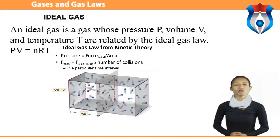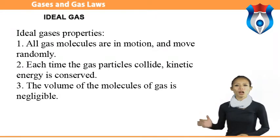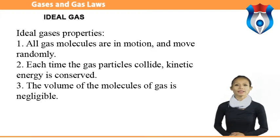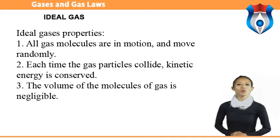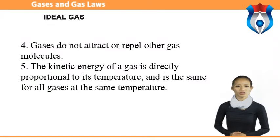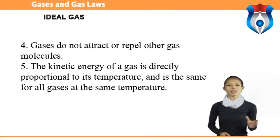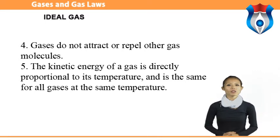An ideal gas is a gas whose pressure P, volume V, and temperature T are related by the ideal gas law: PV = nRT. Ideal gases have the following properties: all gas molecules are in motion and move randomly; each time the gas particles collide, kinetic energy is conserved — this is called elasticity; the volume of the molecules of gas is negligible; gases do not attract or repel other gas molecules; and the kinetic energy of a gas is directly proportional to its temperature in Kelvin.